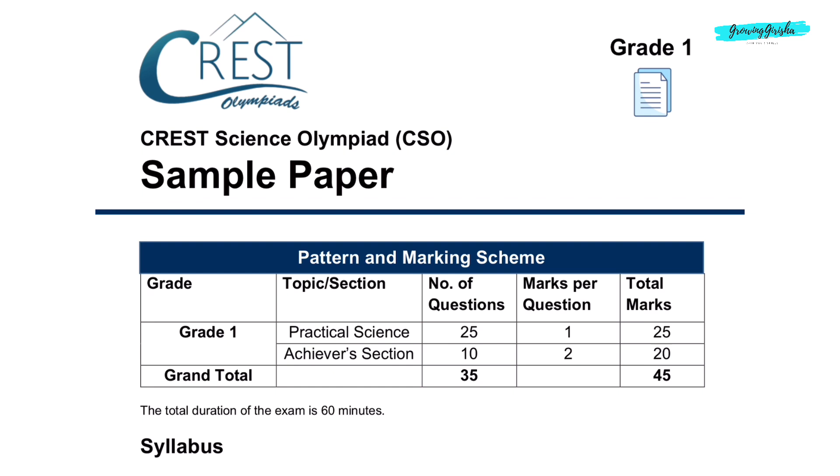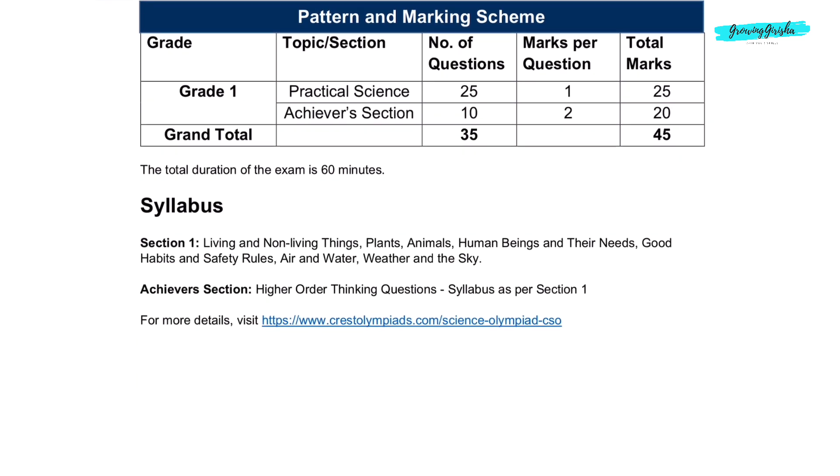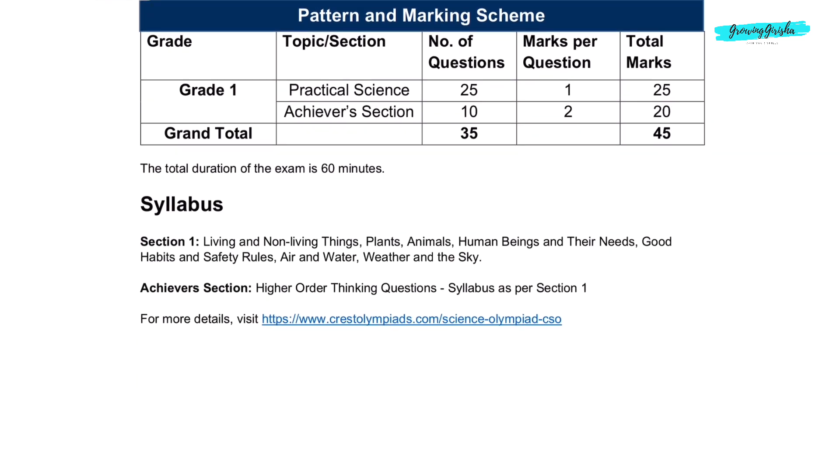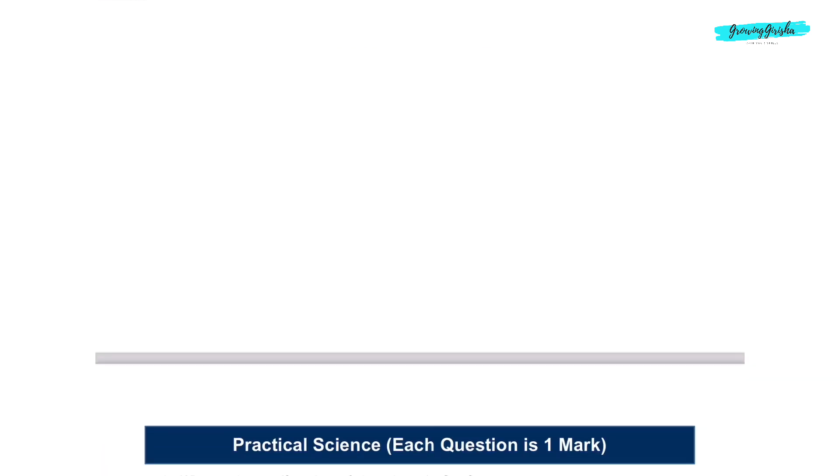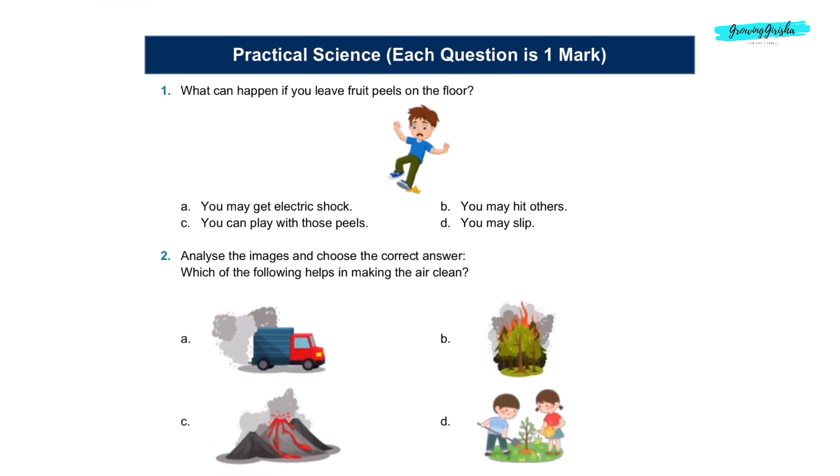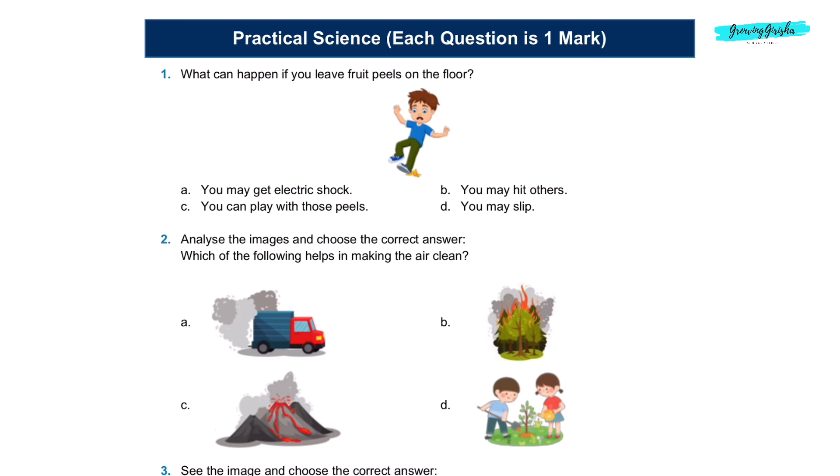Hello friends, welcome back to my channel. Crest Science Olympiad CSO for grade 1 sample paper. Here is the pattern and marking scheme and here is the syllabus. The total duration of the exam is 60 minutes and number of questions are 35. Practical Science, each question is one mark.